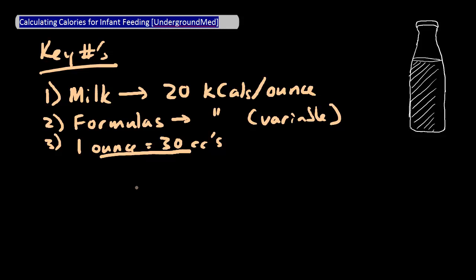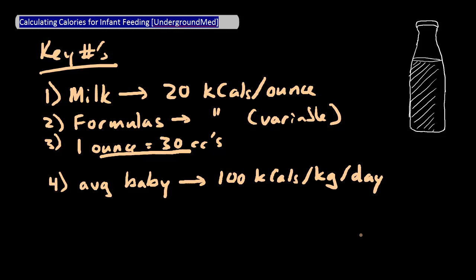And the last number to memorize is that your average baby is going to need 100 kilocalories per kg per day. This is very variable, and you need to take into account your individual patient's metabolism and caloric needs. But that is a good place to start. So let's practice with some of these numbers.